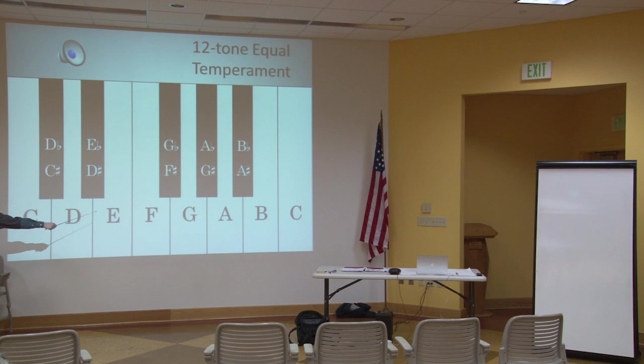The white keys you heard were the major scale, which is a very famous scale, and it's actually the reason why we have 12 notes. You may have also heard it in the Sound of Music — Do, Re, Mi, Fa, Sol, La, Ti, Do, and back down. That's also actually why the keyboard is the way it is.